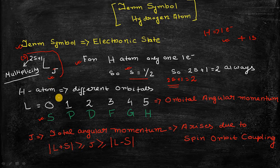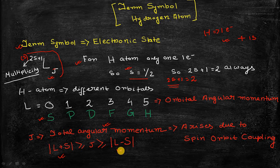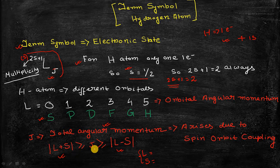On the right-hand side of the term symbol there is the term J, called the total angular momentum. As described in an earlier lecture, J arises due to spin-orbit coupling — the coupling between the electronic spin motion and orbital motion. J can have the values L+S and |L−S|, where L is the orbital angular quantum number and S is the spin quantum number. Using this equation you can calculate the J value for any electronic system.